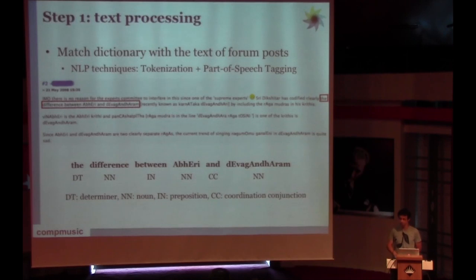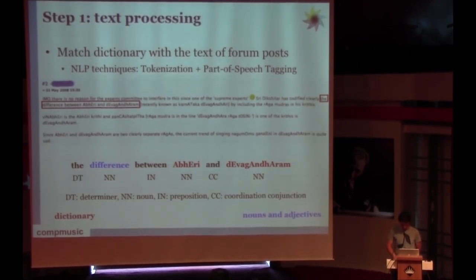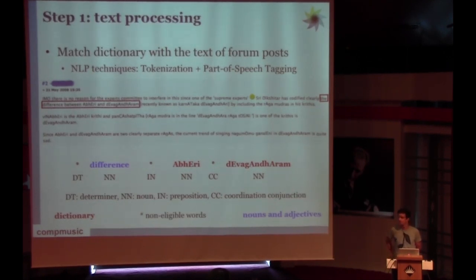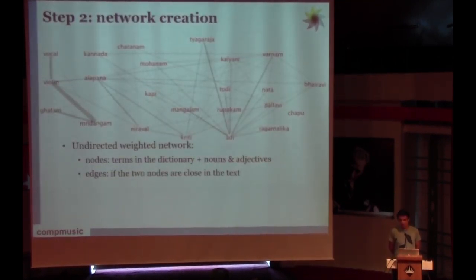Once we perform these natural language techniques, we match our dictionary with these sentences. For example, in our dictionary we could match these two words, but we also considered nouns and adjectives. For example, we also matched difference. All the rest of the words that were not matched are marked as non-eligible words. Once we match our dictionaries and the nouns and adjectives in these forum posts, we create or generate an undirected weighted network representation of this text.